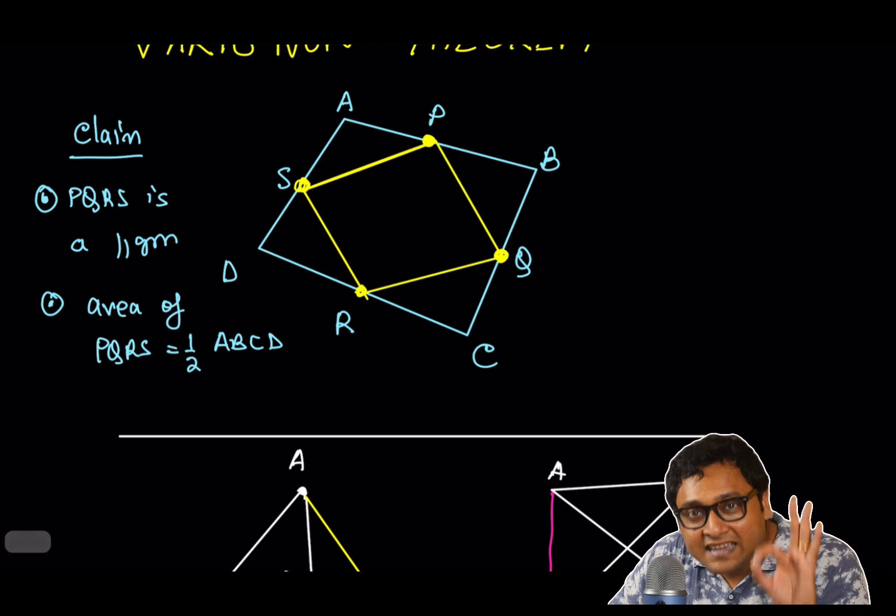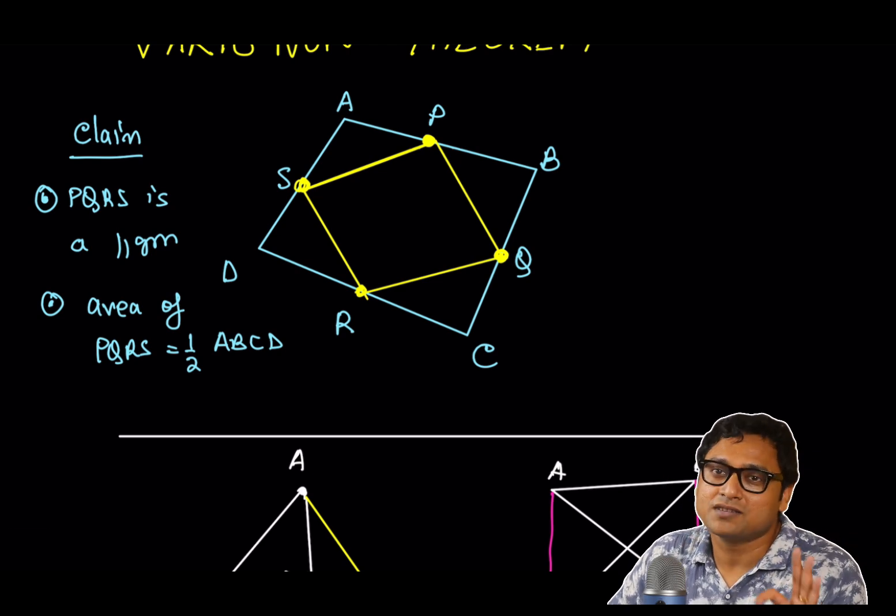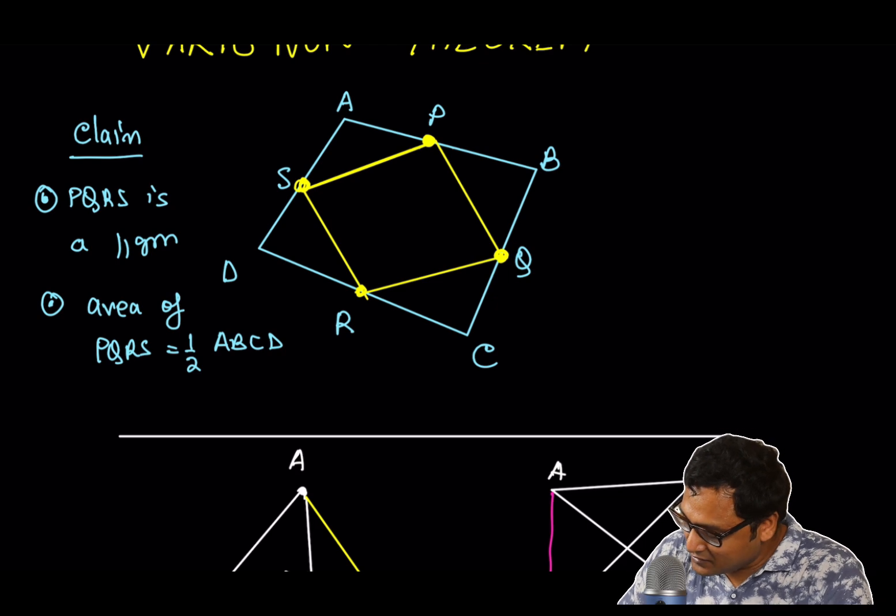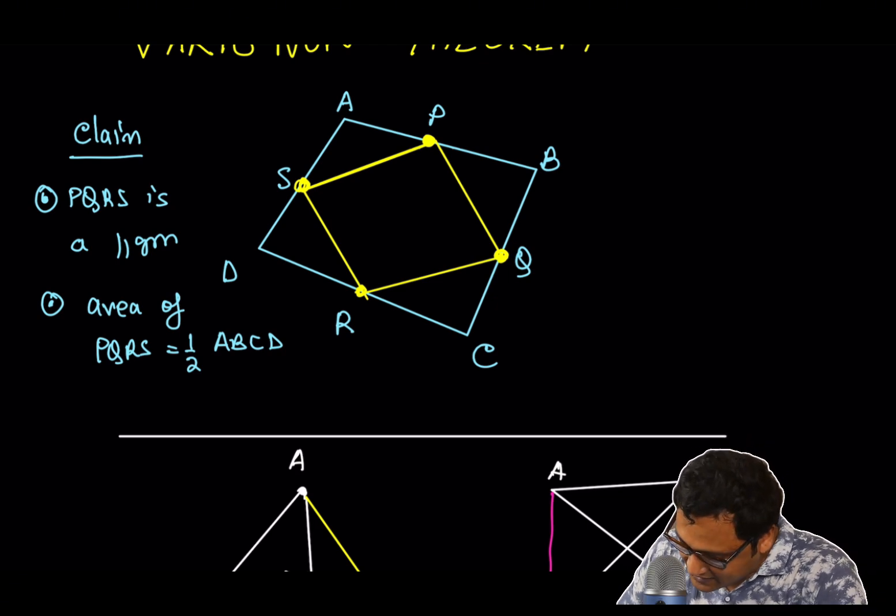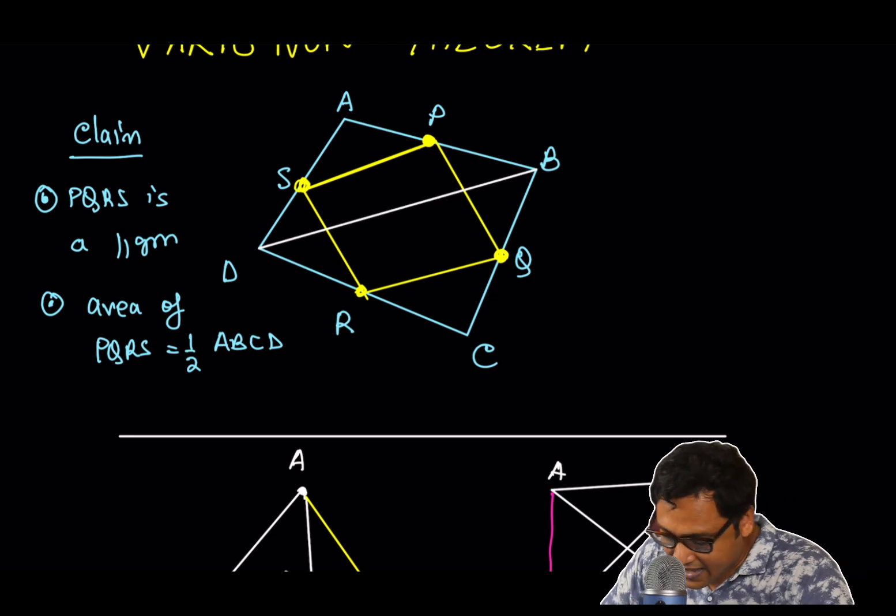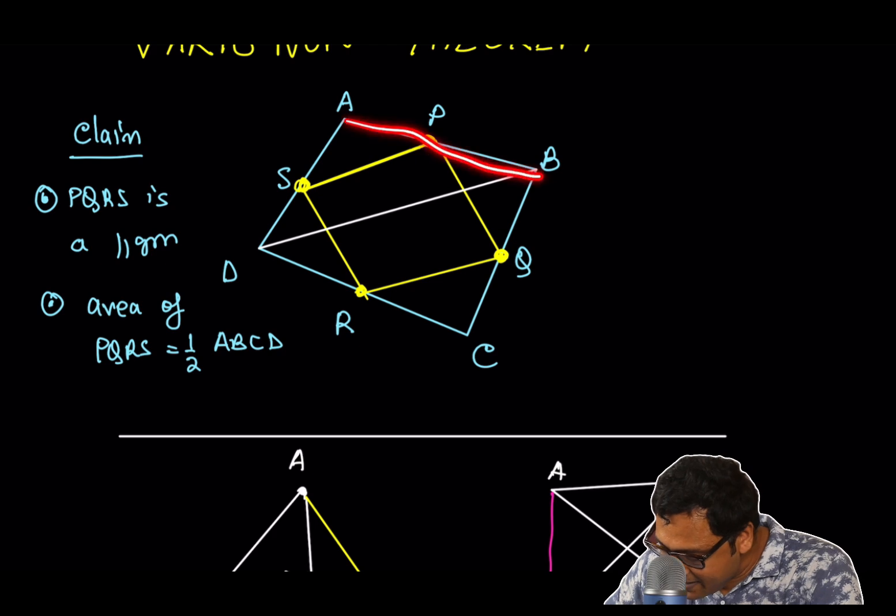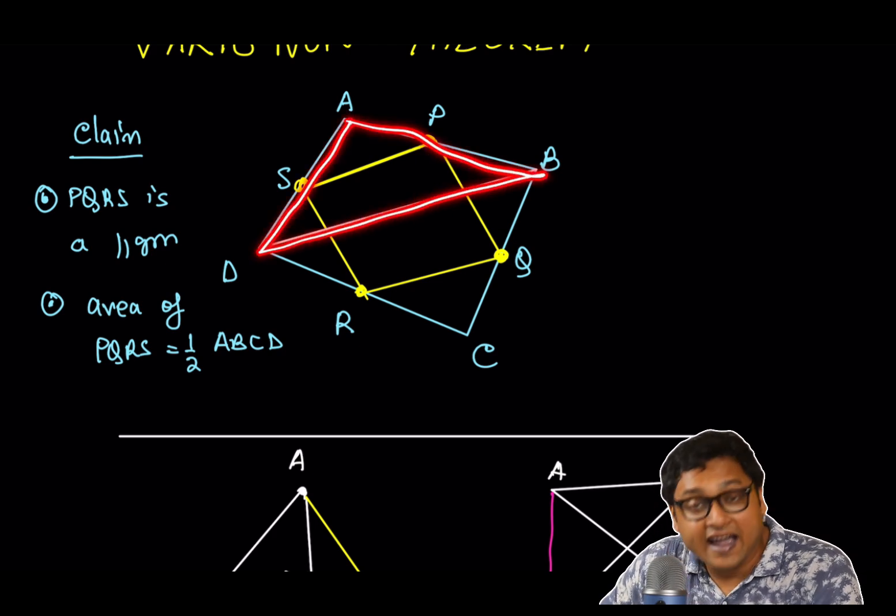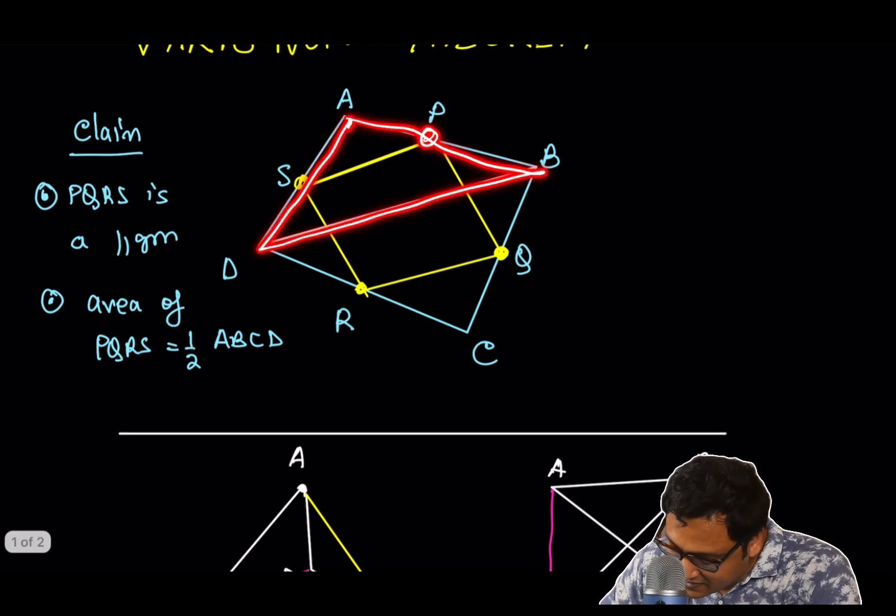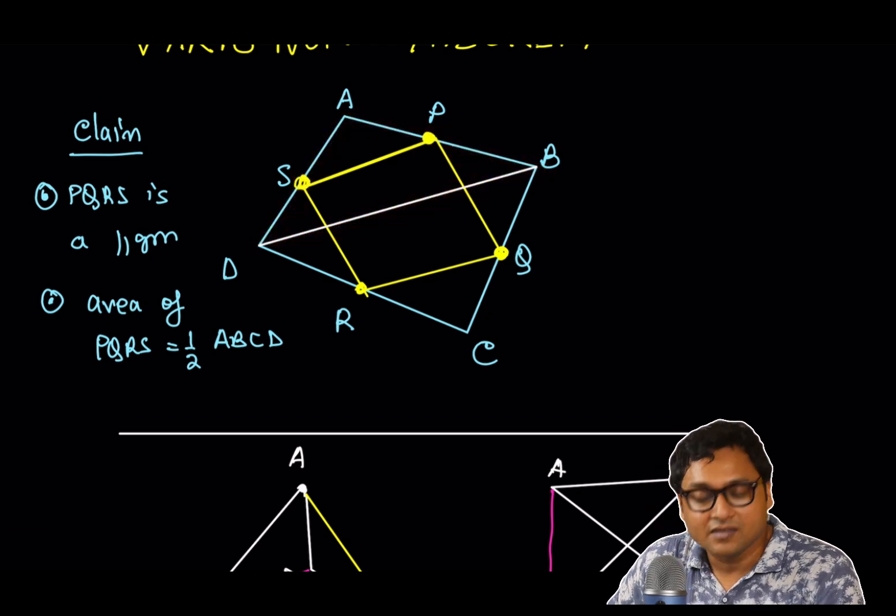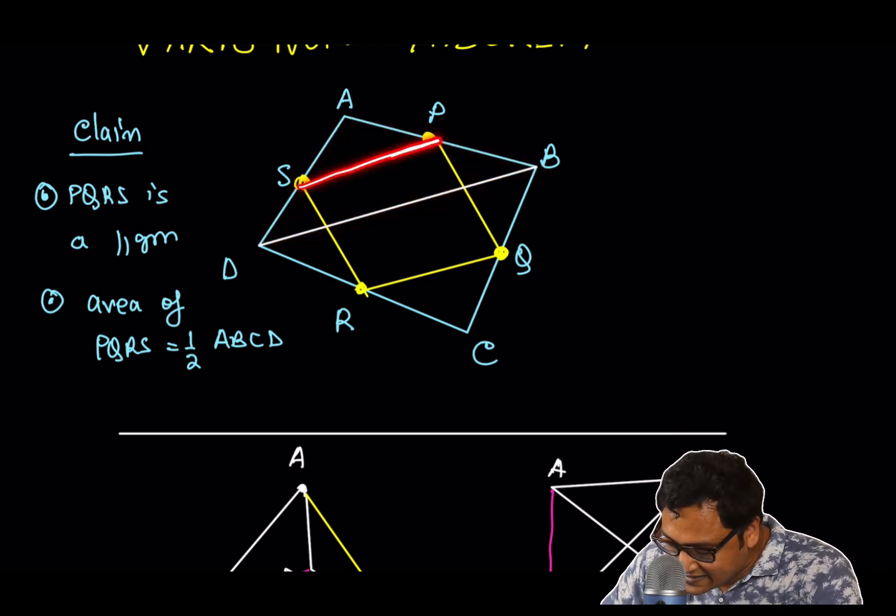I will do the first case, and then I will give you as a challenge for the other two cases. The key construction to solve this problem is to draw the diagonals. So, let me draw the diagonal. Let's join B, D. And immediately we notice that in A, B, D triangle, P is the midpoint of AB, and S is the midpoint of AD.